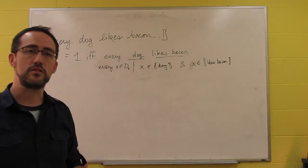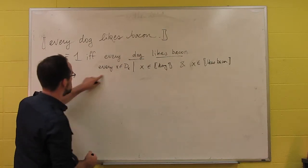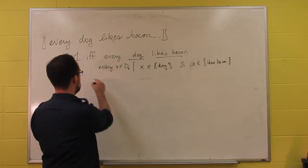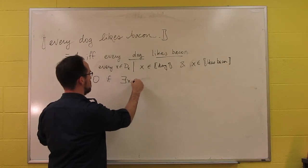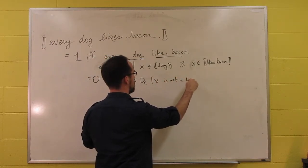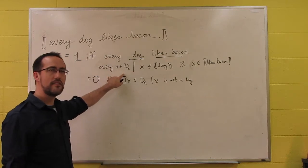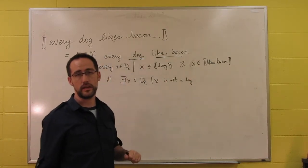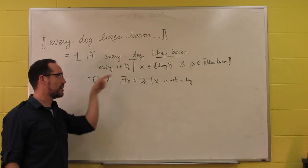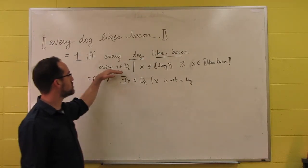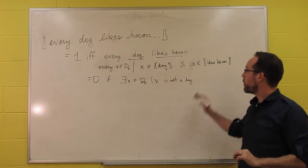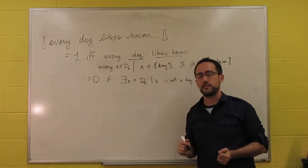We could say this: every X is such that X is a dog and X likes bacon. We can replace every X with every individual. Every individual is a dog and likes bacon. Does that work? Is that the truth conditions we want? That would be false if there is an individual that is not a dog, because this is everything in the set of individuals. But there are things that aren't dogs. So this cannot be the meaning that we want. This would also mean that everything likes bacon, and we don't want that either.